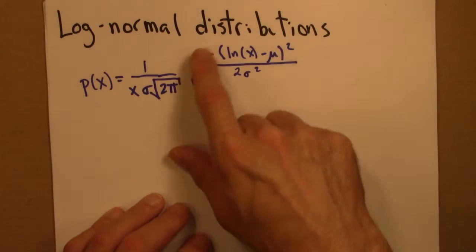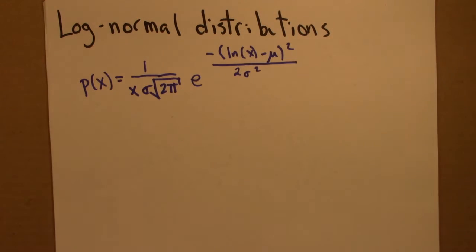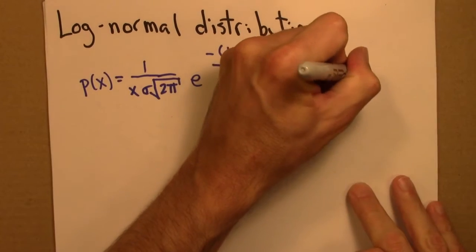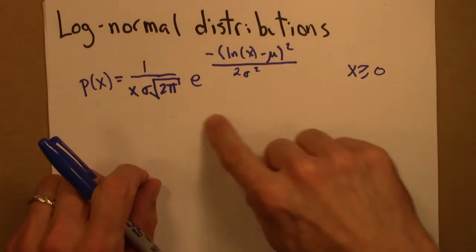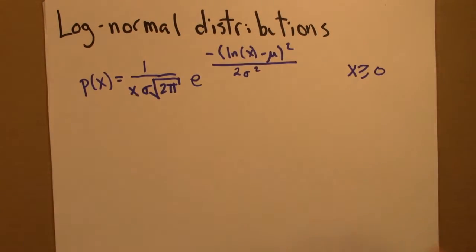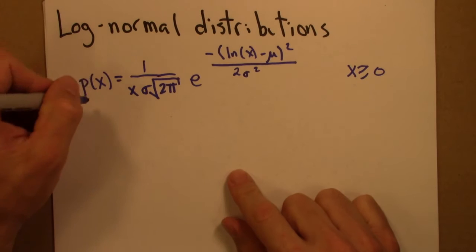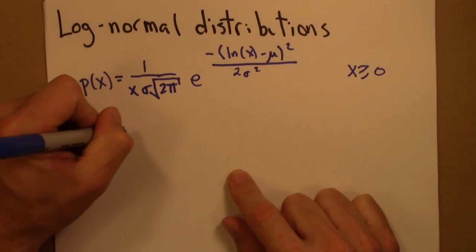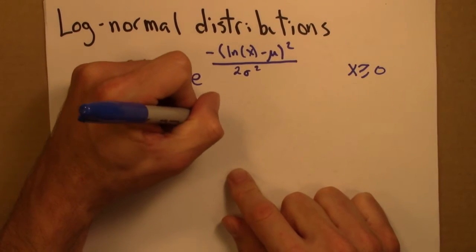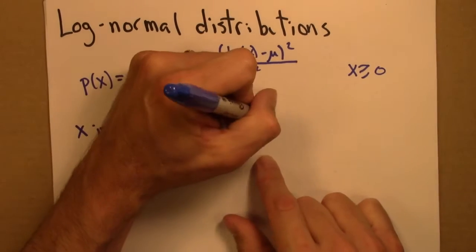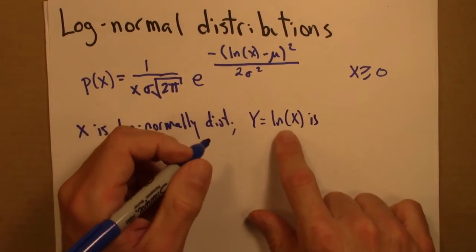So a log-normal distribution is defined by the following relationship. So x, and x is now a continuous and positive variable, or non-negative I guess, is distributed according to this equation. And why is this called log-normal? Well, for the following reason. So if x is log-normally distributed, then that means that a variable y, the log of x, is normally distributed.